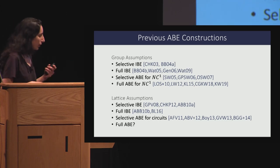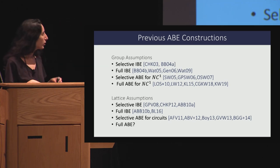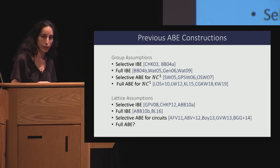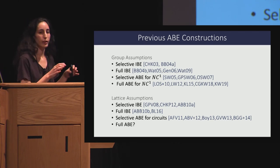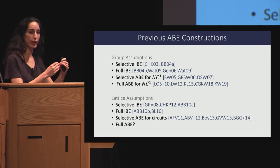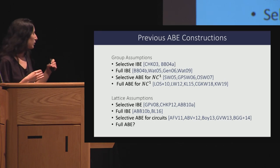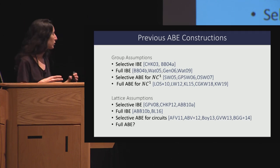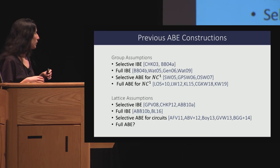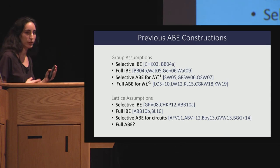There are two main lines of prior work: one relying on group-based assumptions and the other on lattice-based assumptions, and both evolved similarly. First there were selectively secure constructions for IBE, then fully secure constructions for IBE, then selectively secure constructions for the larger class of functions (ABE). With group-based assumptions, there was a breakthrough with the dual system by Waters, yielding fully secure ABE. With lattices, this problem remained open.